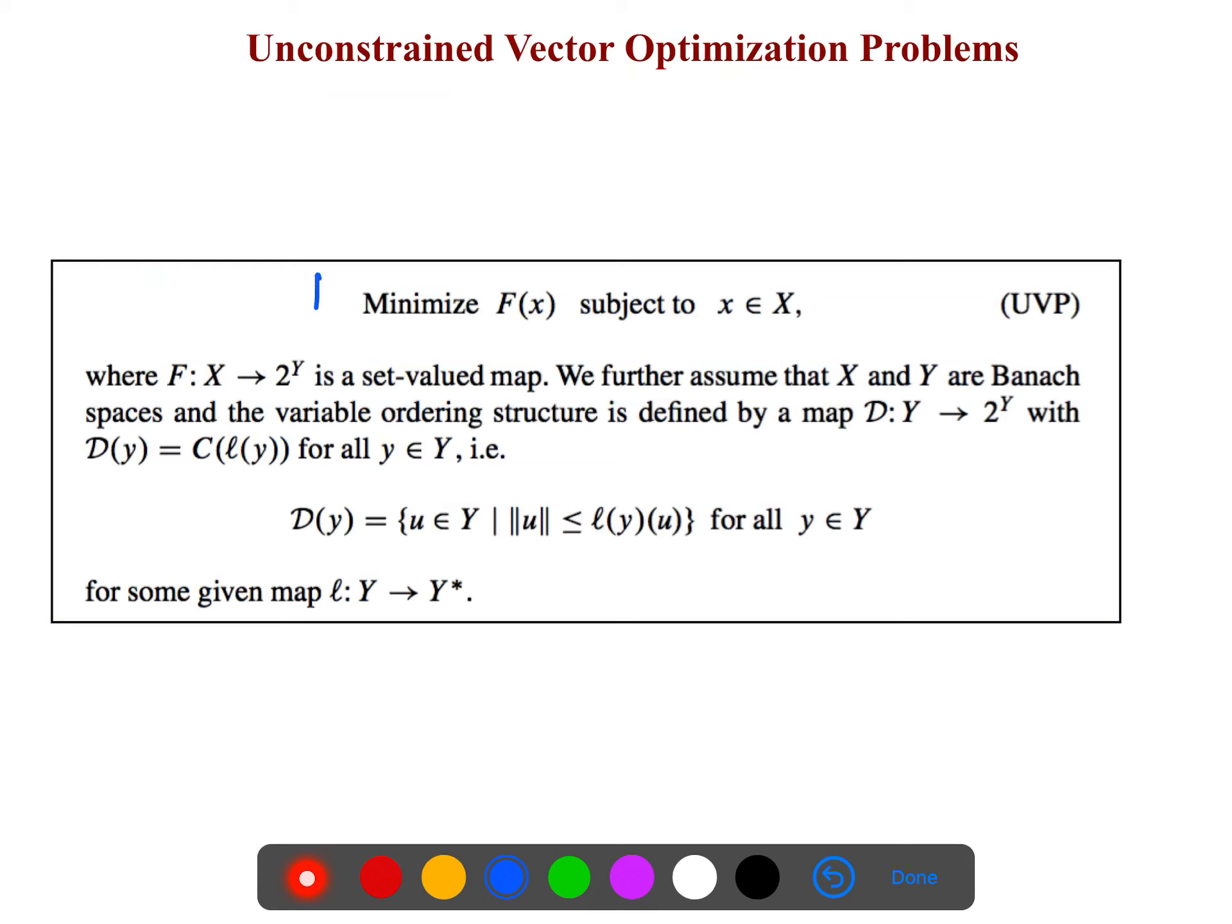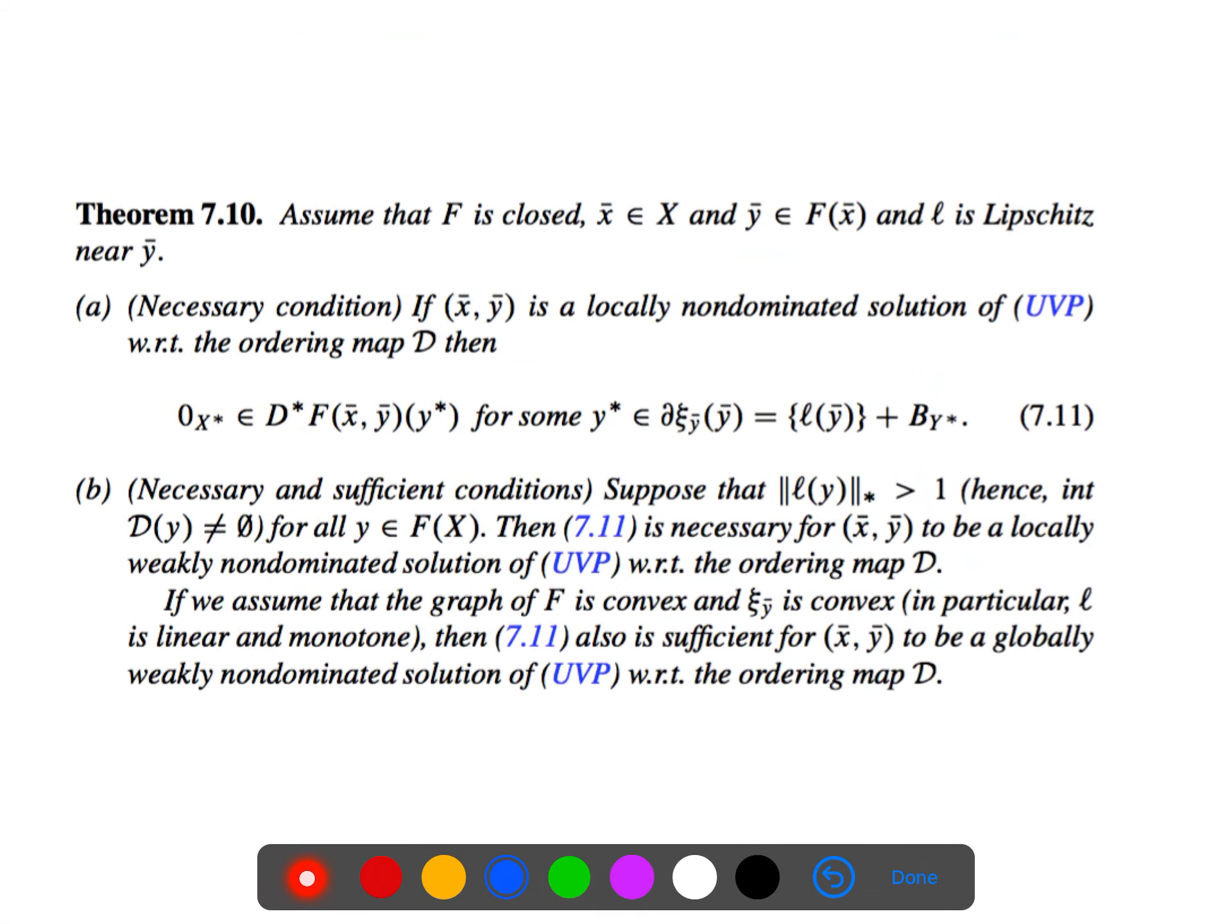And that's why, minimizing f of x, we want to generalize the Fermat for non-smooth. When any of our functionals are non-smooth. Again, we use the BP cone for our cones.